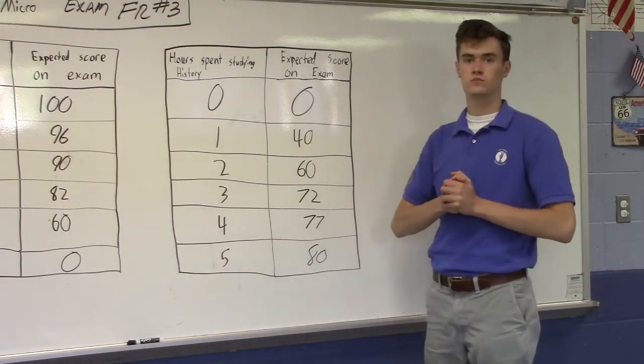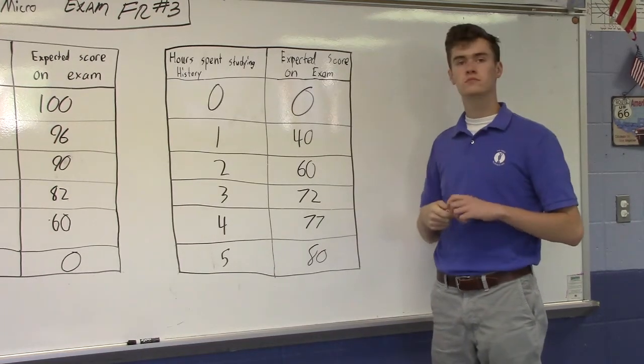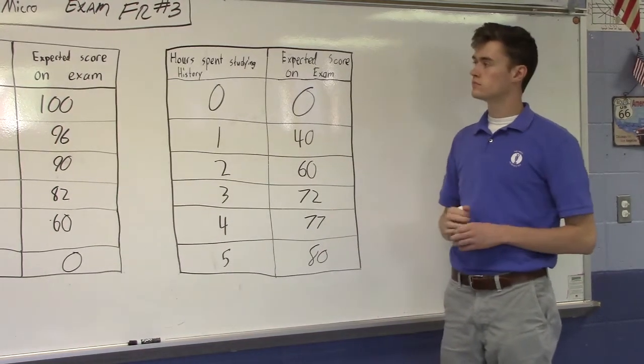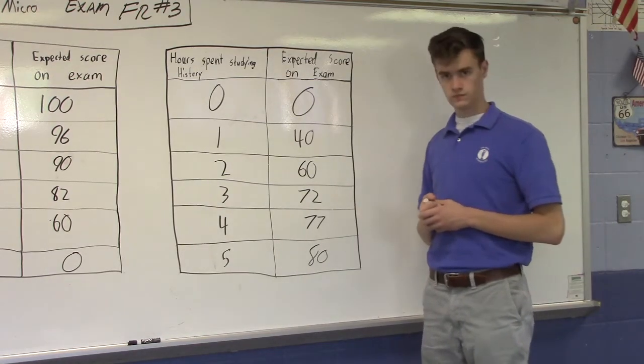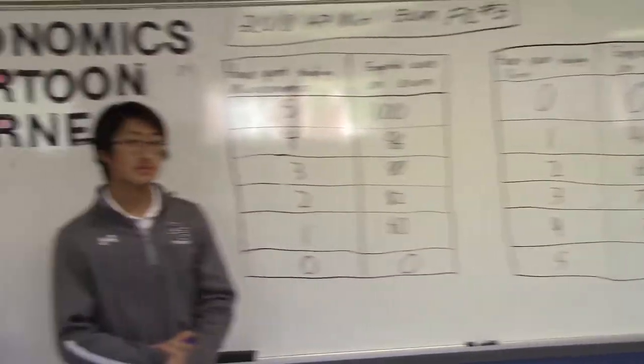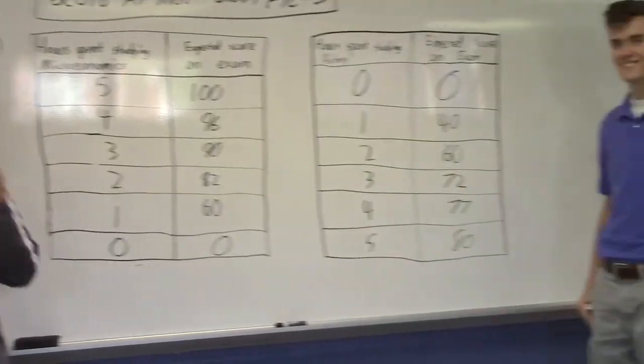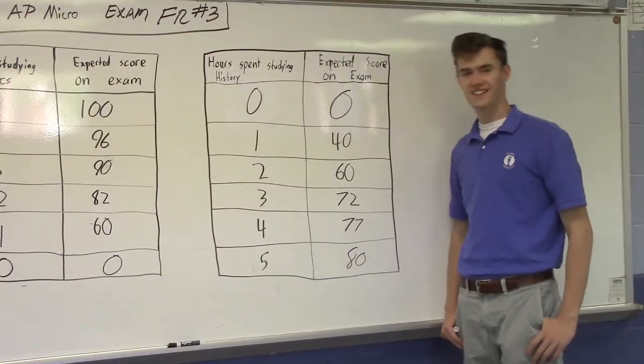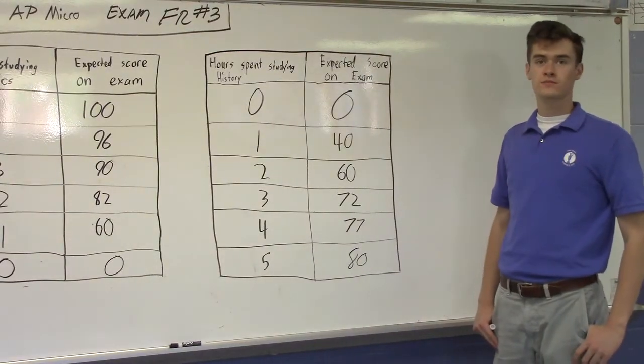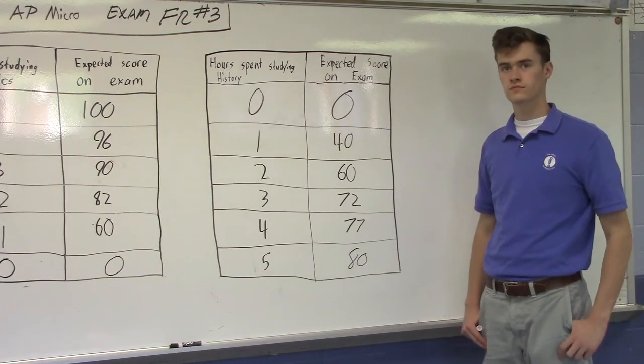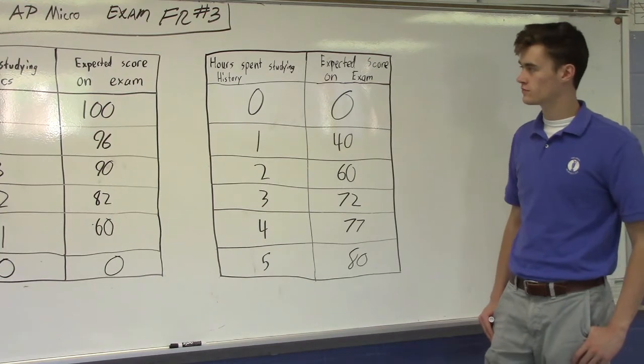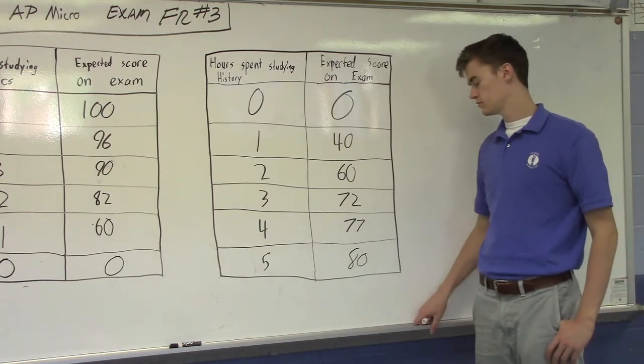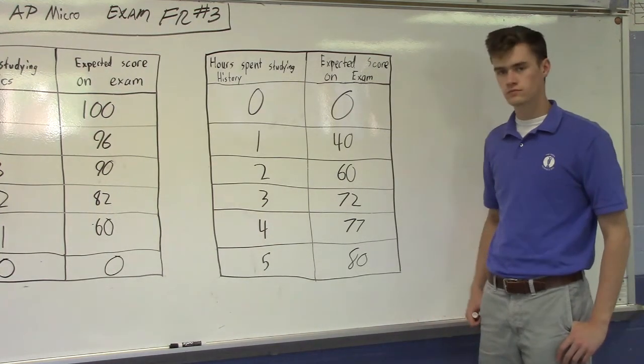So here's the question. Noralia is a student at the University of Ainsley. She has five hours to study for two exams today. You guys understand that, don't you? Five hours to study for two exams. You better use your time wisely. You better think like an economist. The tables below show Noralia's expected scores given the amount of time she studies for each exam.